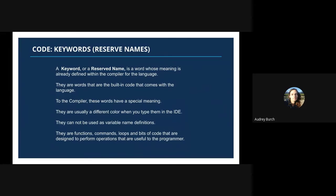The next thing to talk about are code keywords themselves. Keywords are also called reserved names — these are words whose meaning is already defined within the compiler for the language. These are special words that have a special meaning and are the words built in to the code itself that actually make it a programming language. When you're writing in an IDE, they'll usually be a different color, and they cannot be used as variable definitions. They are special functions, commands, loops, or bits of code designed to perform operations useful to a programmer.